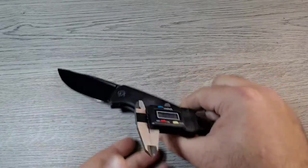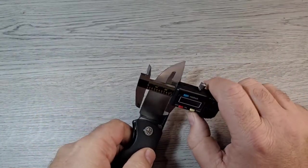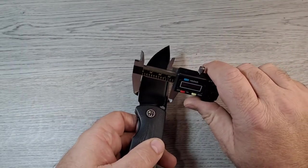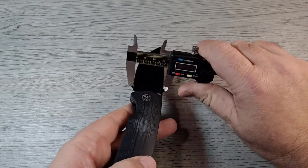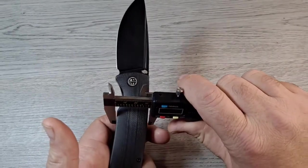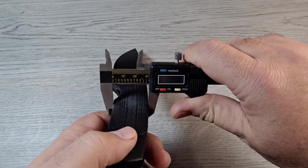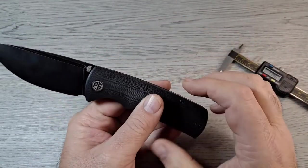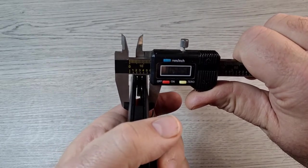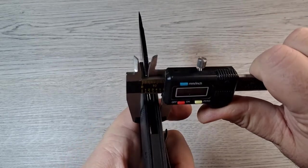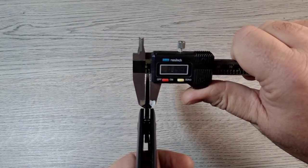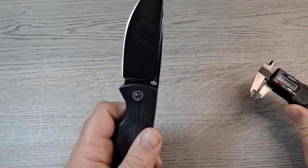Rest we can do with the calipers. Zero it out. The blade width at the widest is 1.32 inches. Handle height is 1.19. Handle thickness, it's pretty wide, over half an inch at 0.586. Blade stock looks pretty thick, 0.148 and a half, so 0.149.